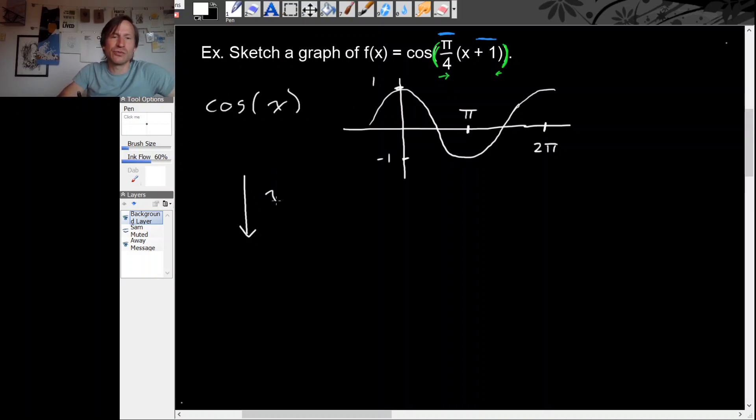So we're going to replace x with pi over 4 times x. That gives us cosine pi over 4 times x for our formula and the corresponding operation on the graph is compression horizontally by pi over 4.